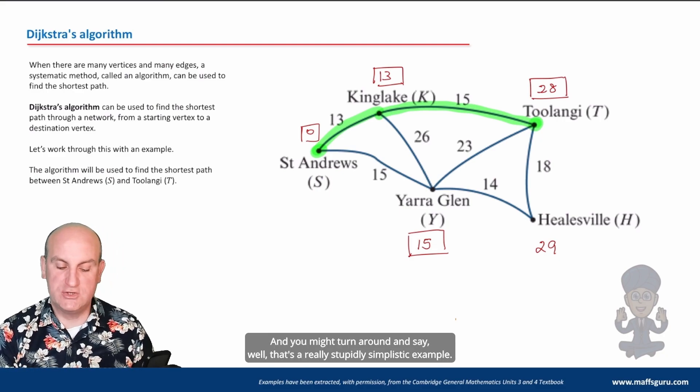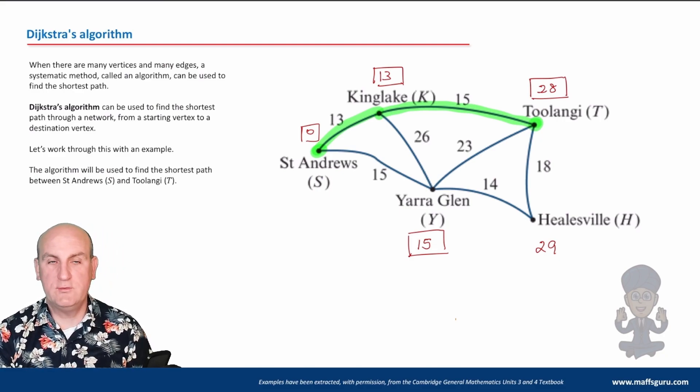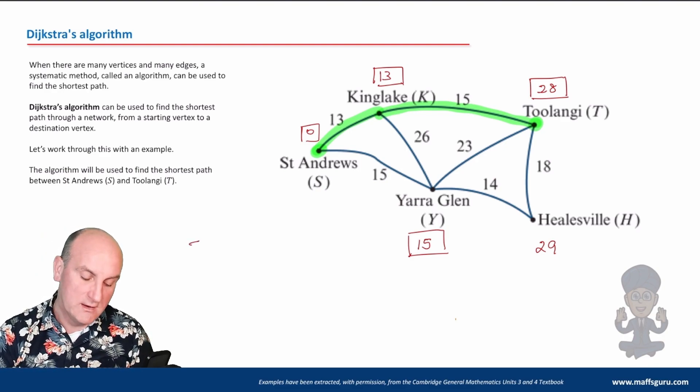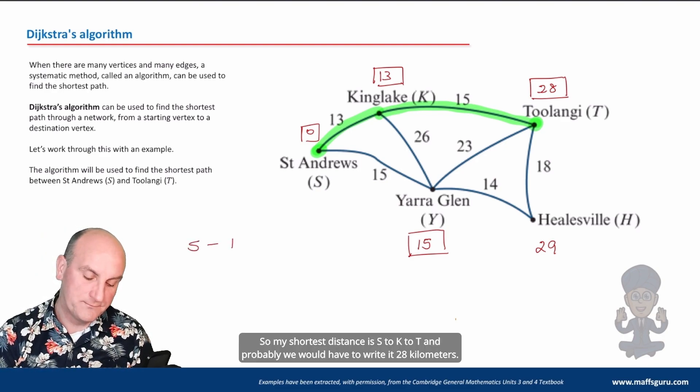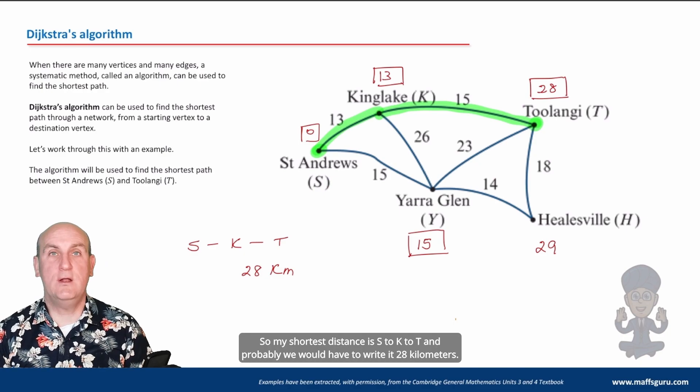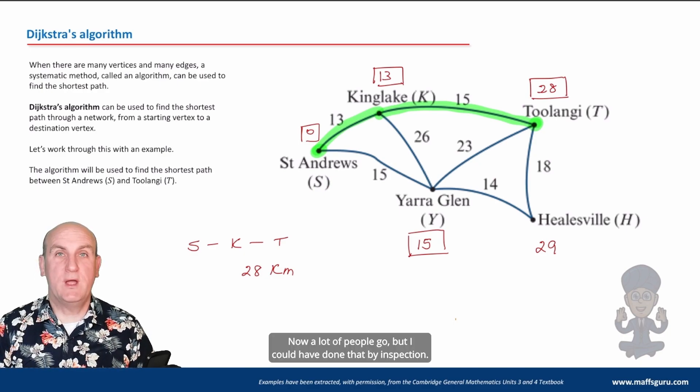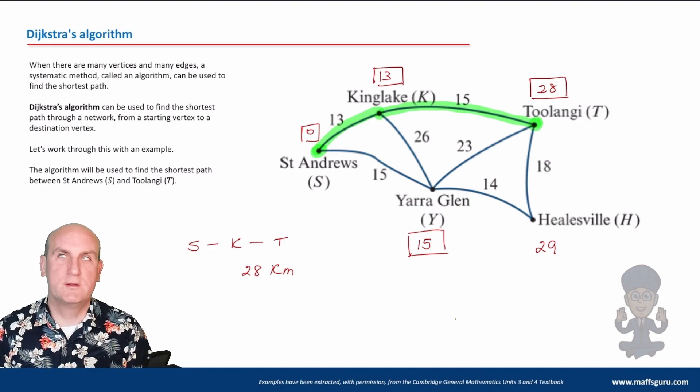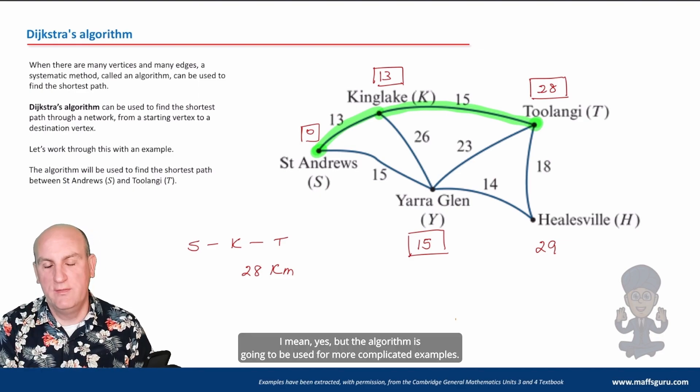And there we go. And you might turn around and say, that's a really stupidly simplistic example. Of course it is, yes, that's why I chose it first, or probably that's why Cambridge chose it first. So my shortest distance is S to K to T, and probably we would have to write it's 28 kilometers. Now a lot of people go, but I could have done that by inspection. Of course you could have done with that example, I mean yes, but the algorithm is going to be used for more complicated examples.